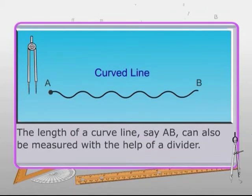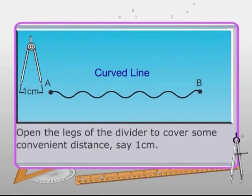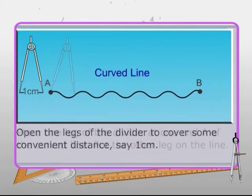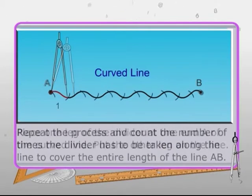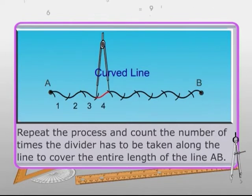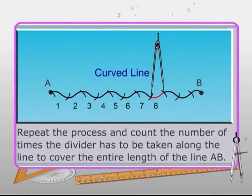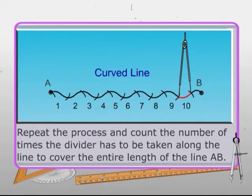The length of a curved line can also be measured with the help of a divider. Open the legs of the divider to cover some convenient distance, say 1 cm. Place one leg of the divider at one end A of the curved line. Put the other leg on the line. Repeat the process and count the number of times the divider has to be taken along the line to cover the entire length of the line AB.